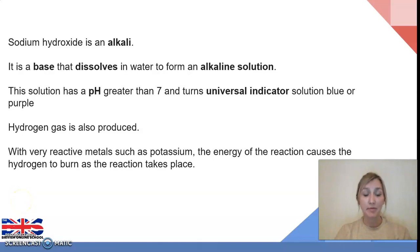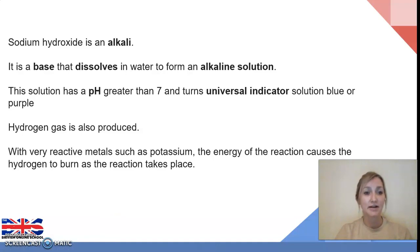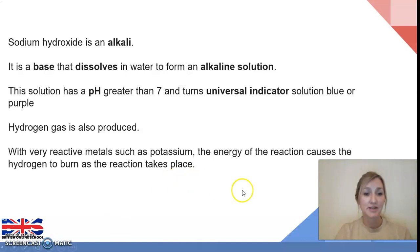As indicated by the name of the group — the alkali metals — they react to form alkaline solutions, such as sodium hydroxide in the case of sodium reacting with water. The definition of an alkali is a base that dissolves in water. So when each alkali metal reacts, it forms a base that dissolves in the water to form an alkaline solution with a pH of greater than seven. If we were to add universal indicator solution to the basin after the reaction, it would turn blue or purple. We also saw hydrogen gas produced.